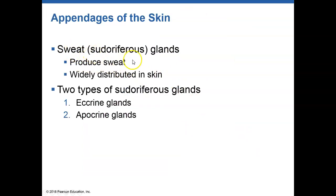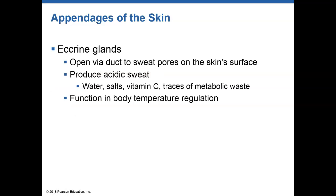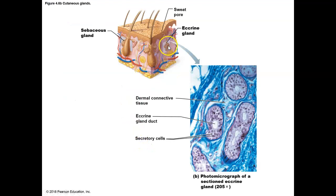There are two major types of sudoriferous glands: eccrine and apocrine. The ones in that figure were eccrine glands. Eccrine sweat glands are associated with sweating when you are hot, and they start functioning at birth. The sweat produced is predominantly water, along with certain ions and some waste products. Those waste products make the sweat slightly acidic, creating an acid mantle on the surface of the skin that protects us from pathogens.